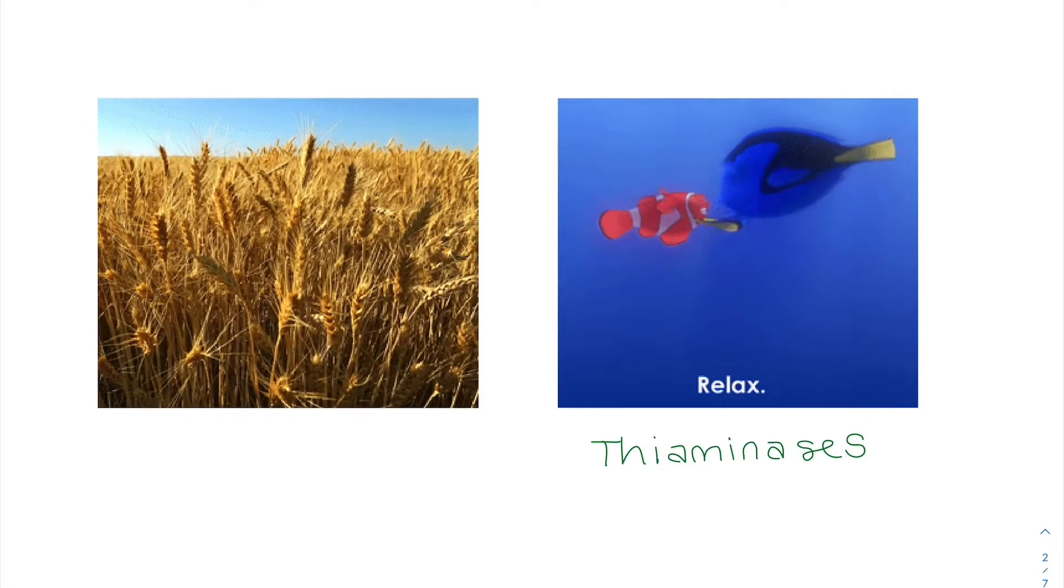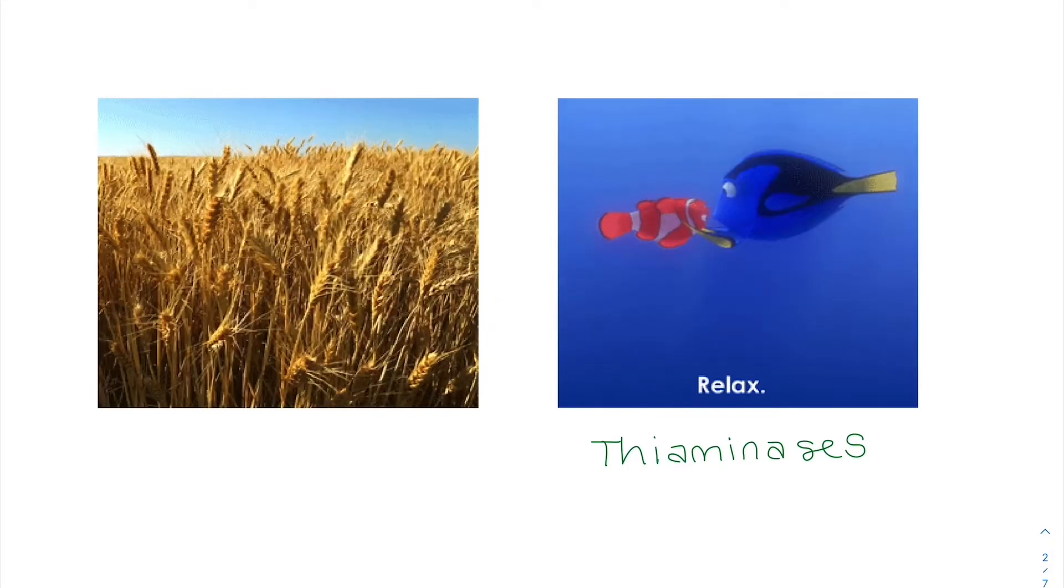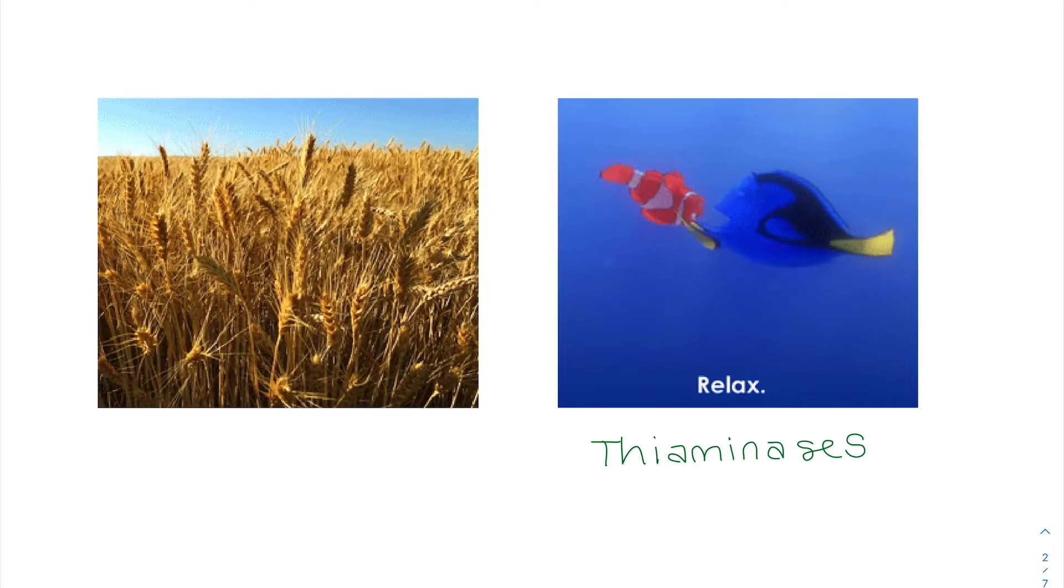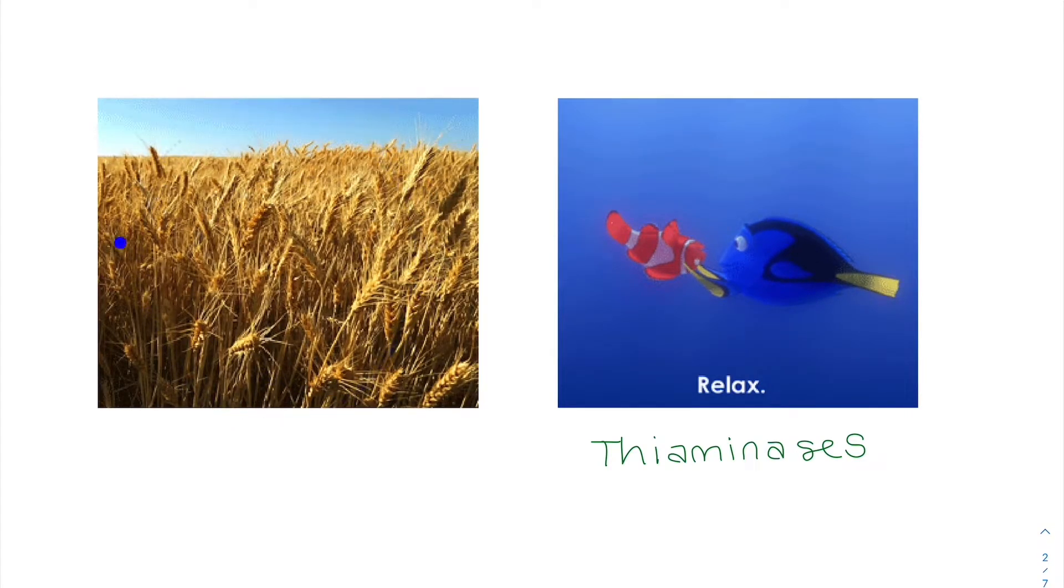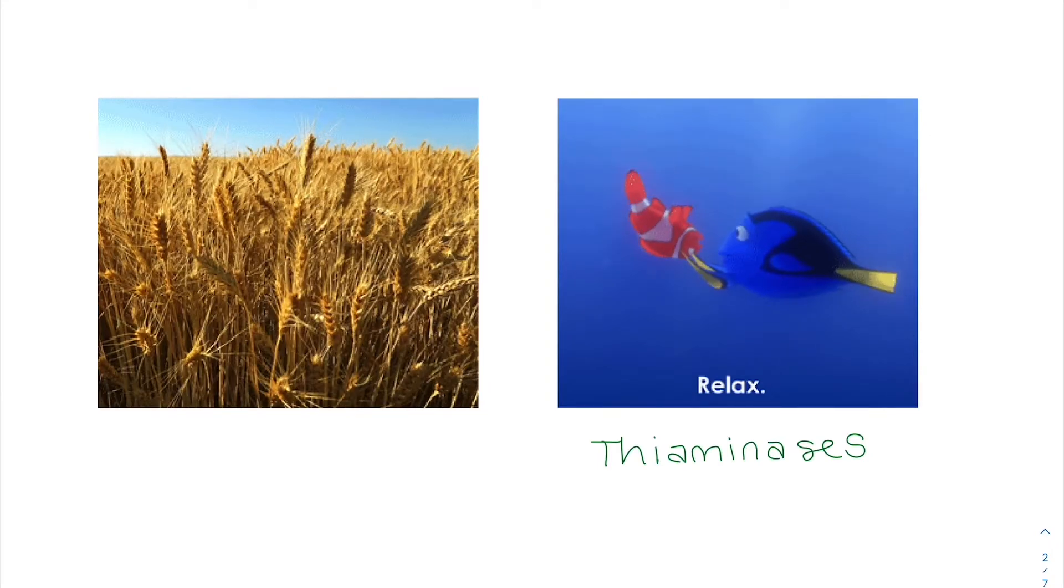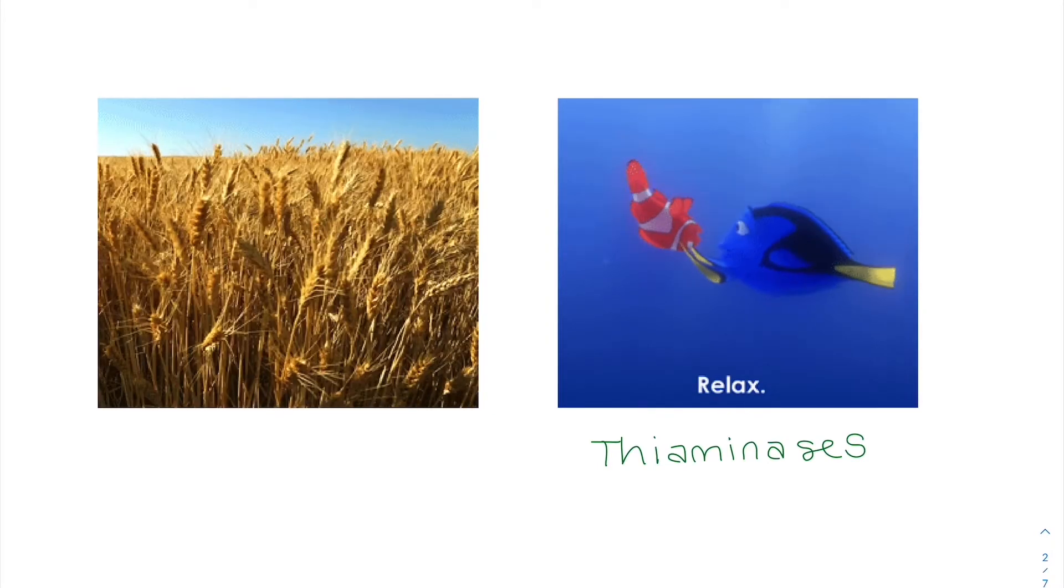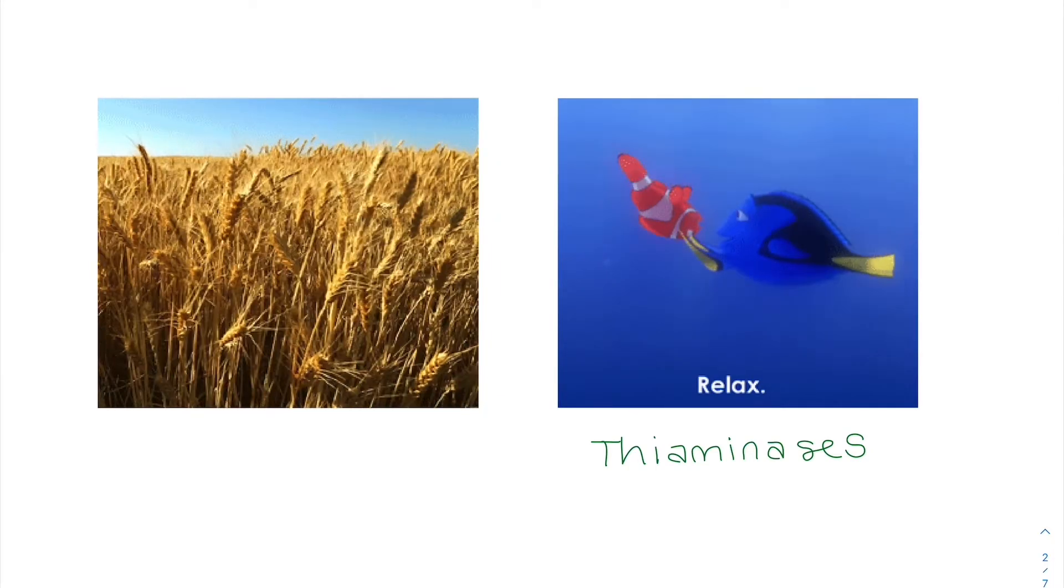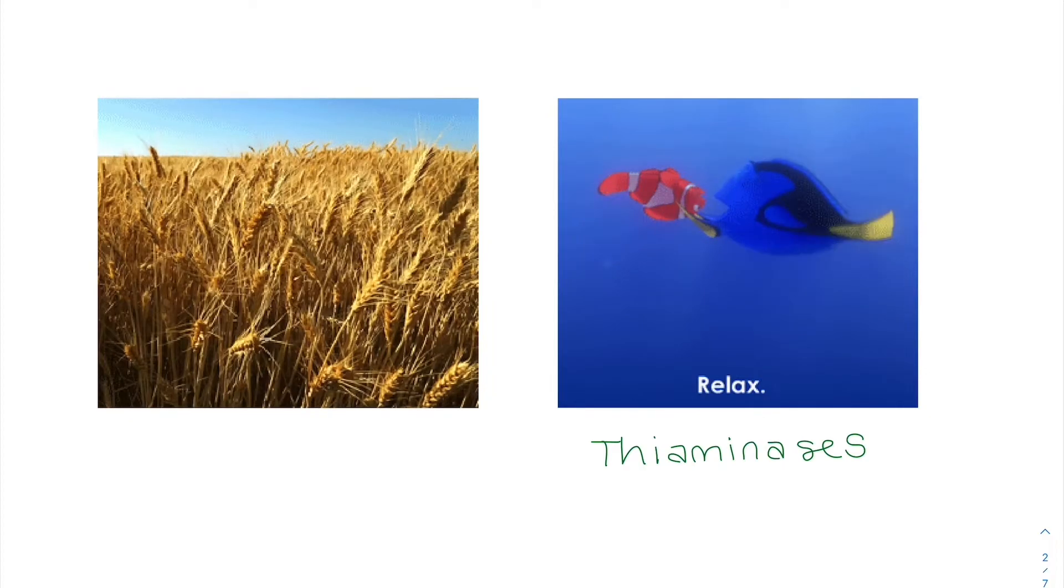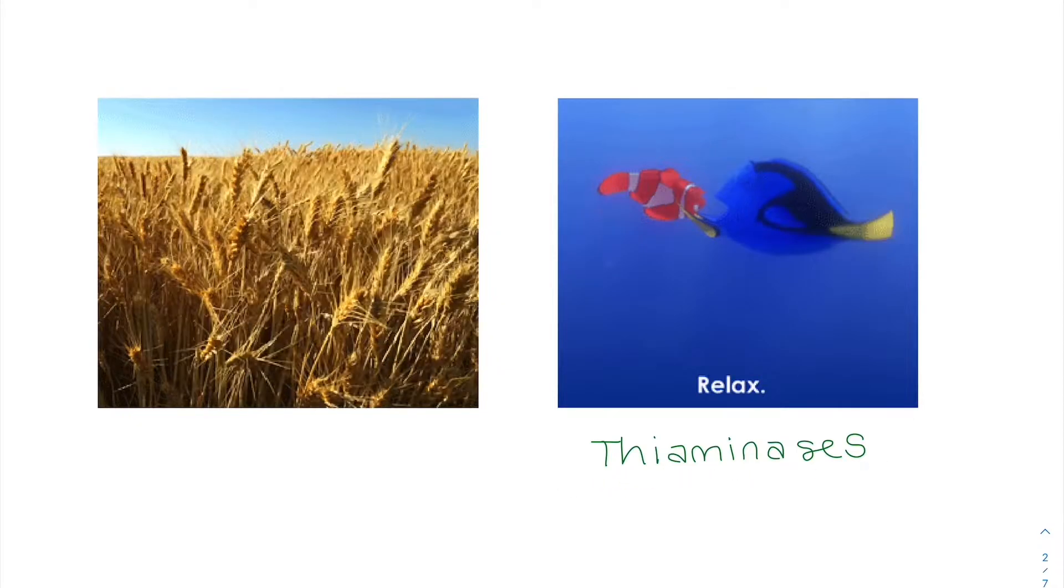So if you're eating raw fish and also ferns, it can give you these thiaminases that breaks down the thiamin. And just like when we cook the whole grains, meats, etc., it does lose that thiamin activity. When we cook the fish, it does prevent us from having these thiaminases. So this is going to be important for something I'm going to talk about a little later.